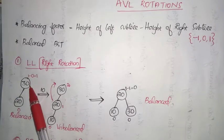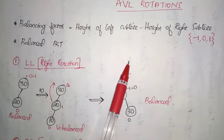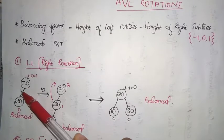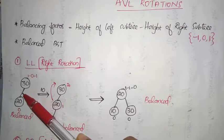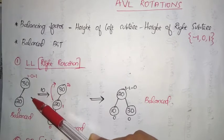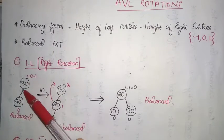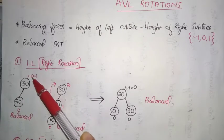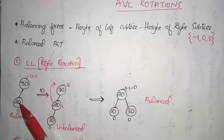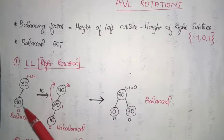The balancing factor of node 30 is height of left subtree minus height of right subtree. The height of the left subtree is 1 — we count the number of edges. Since there is no right subtree, its height is 0. So the balancing factor is 1 minus 0 equals 1. Since the balancing factor of each node is either 0, minus 1, or 1, this particular tree is actually balanced.